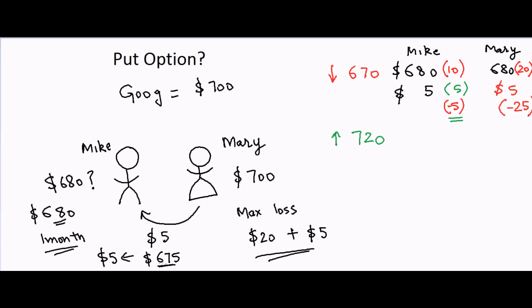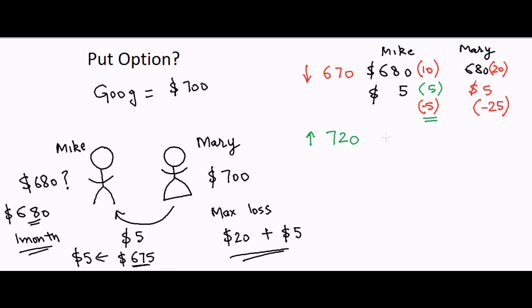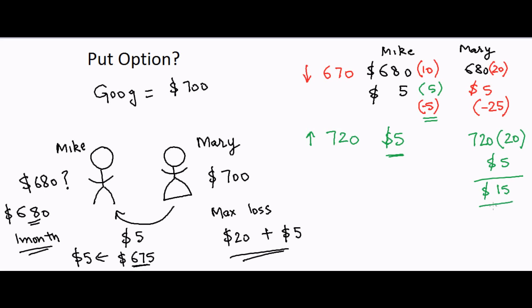On the upside, if the stock went to $720, Mike never gets to buy at $680 so the contract expires worthless — but he keeps the $5 premium as profit. He made $5 just for his willingness to buy the stock at $680. For Mary, her gain on the stock is $20, but she paid $5 to Mike, so her total profit is $15. She gave up a little premium but protected herself from the downside.